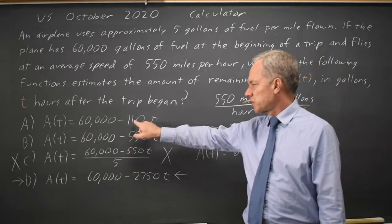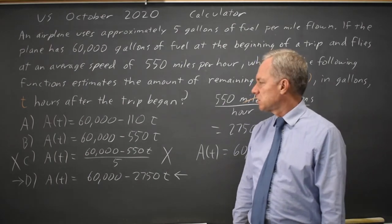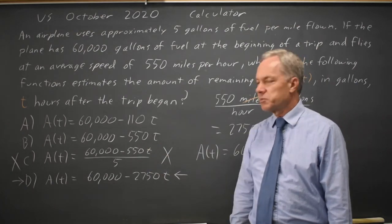To make sure that you're doing the correct thing with the 550 and the 5. If you divided by 5 instead of multiplying, you would end up with choice A. And if you were just looking at the 550 and ignoring how much fuel per mile, you end up with choice B.